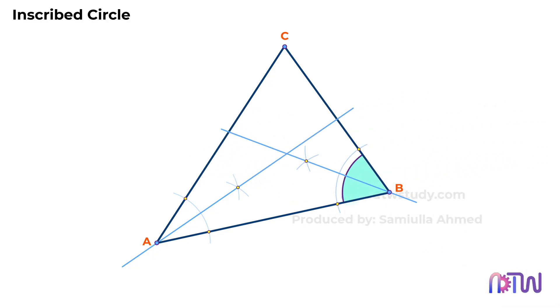This line divides the angle at point B into two halves. The intersection point of these two lines will be the required center point for drawing the circle.